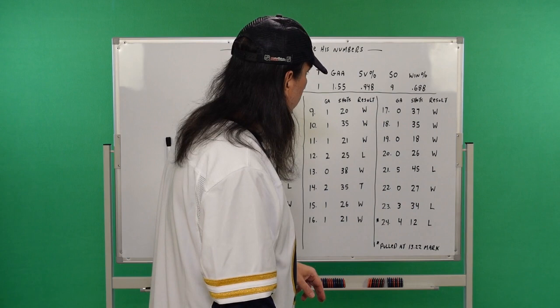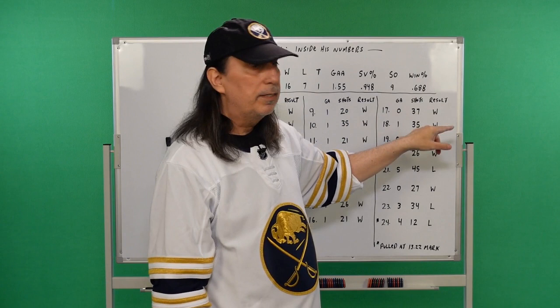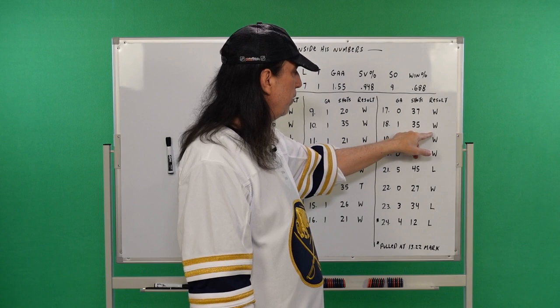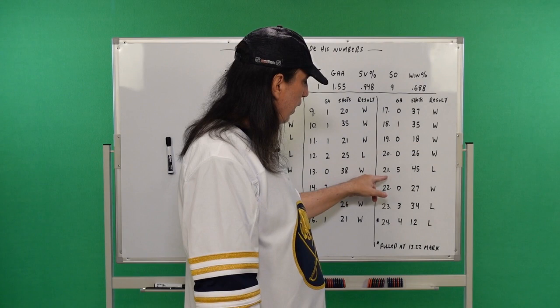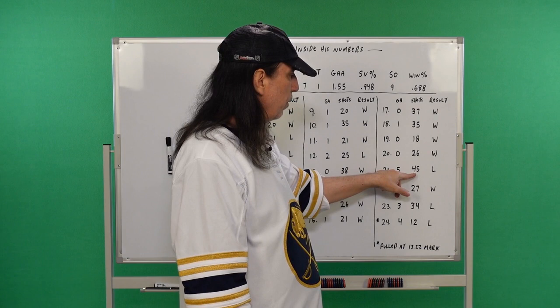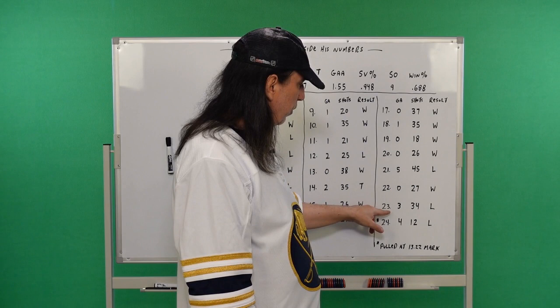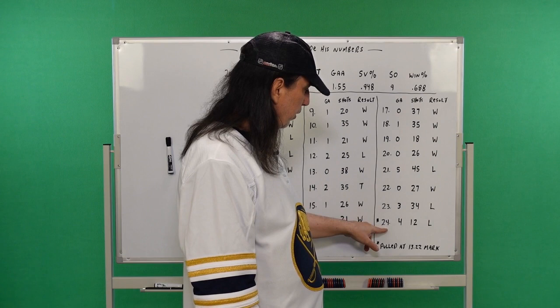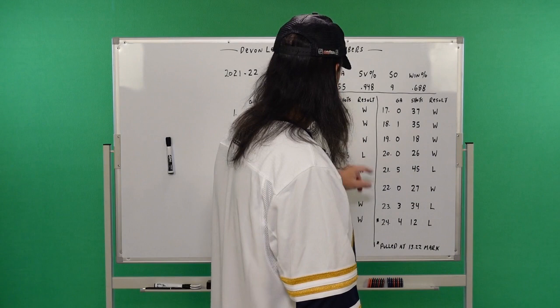Let's go to the final eight. 17 games, zero goals against, again, another shutout, 37 shots, win. Eighteenth game, one goal on 35 shots, win. Nineteenth game, zero goals, again, 18 shots, win. Game number 20, zero goals, 26 shots, win. And here's where it gets a little weird. 21st game, five goals on 45 shots, loss. 22nd game, zero goals on 27 shots, win. And 23rd, the 23rd game, three goals against on 34 shots, loss. And here it is. The last game he played, he let in four goals and 12 shots and he was pulled at the 13:22 mark. It's his only blemish really all year. So you see the seven losses there and the tie there.